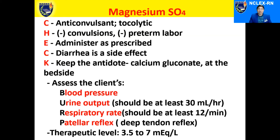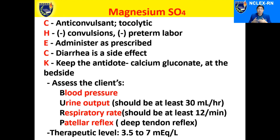Always remember the therapeutic level of magnesium sulfate is 3.5 to 7 milliequivalents per liter. Now, what happens when the respiratory rate of the patient increases beyond 25 per minute? That could be a danger sign because it could mean the patient is developing pulmonary edema, and that should be something you need to report to the physician.